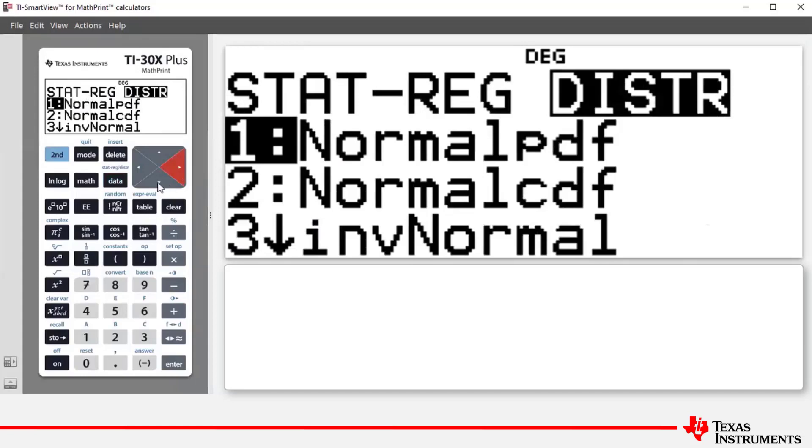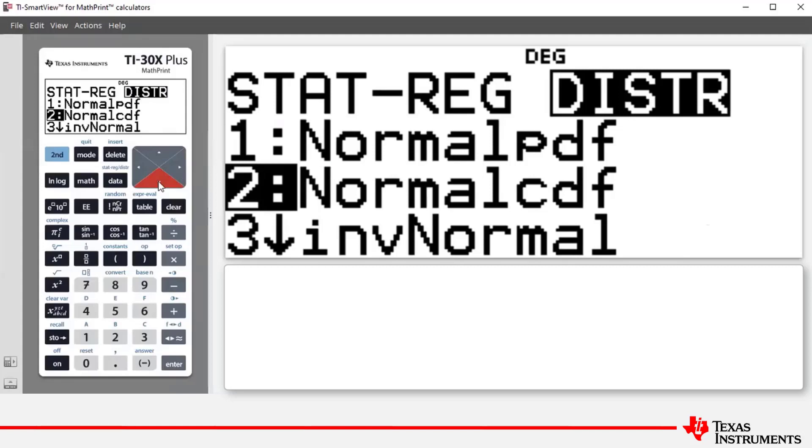The command we're going to look at today is number two, normal CDF, and it calculates the probability between a lower bound and an upper bound for a specified mean μ and a standard deviation σ. The default values are μ equals zero and σ equals one, with the lower bound default value as negative one by 10 to the power of 99 and an upper bound of one by 10 to the power of 99. These bounds represent negative infinity to infinity respectively.